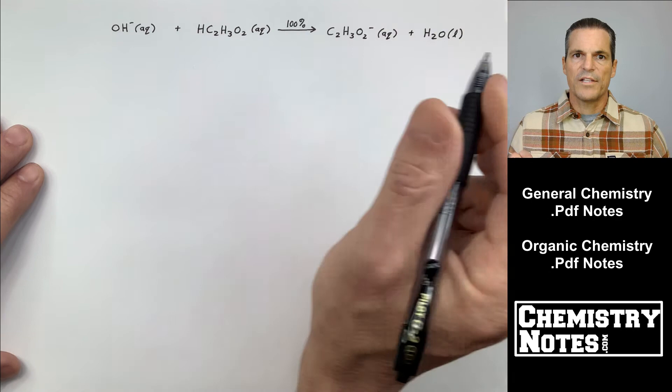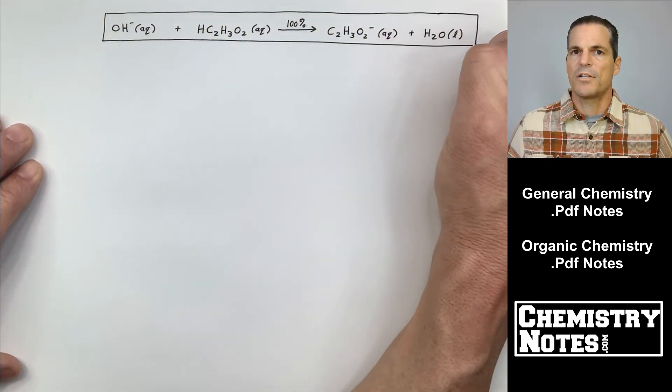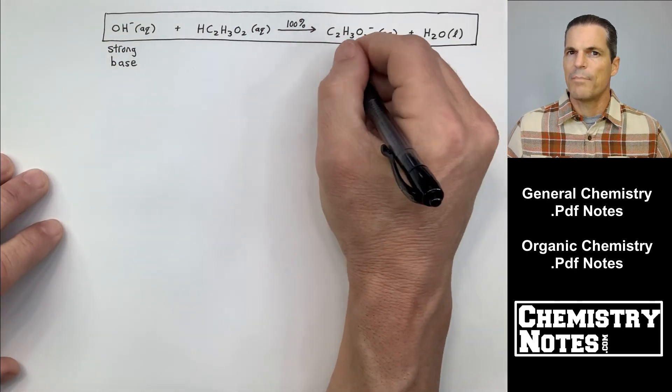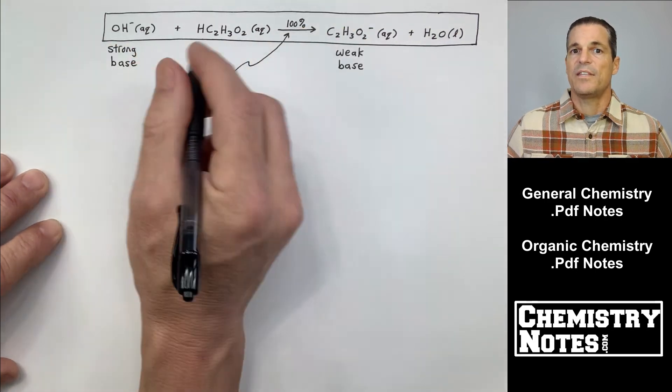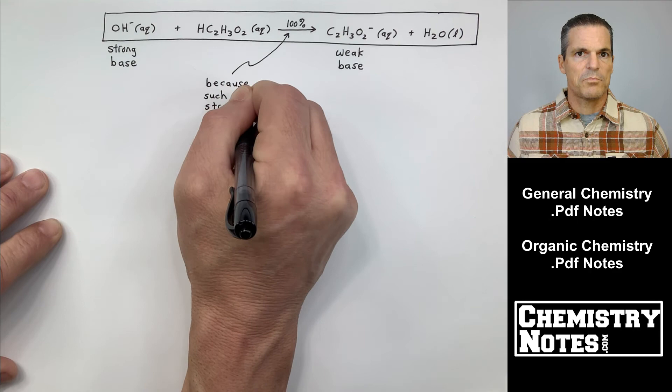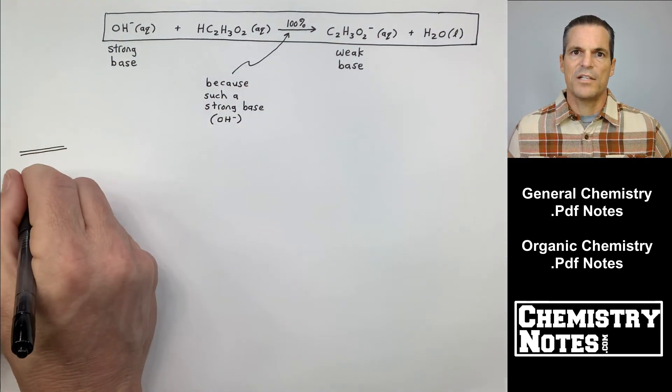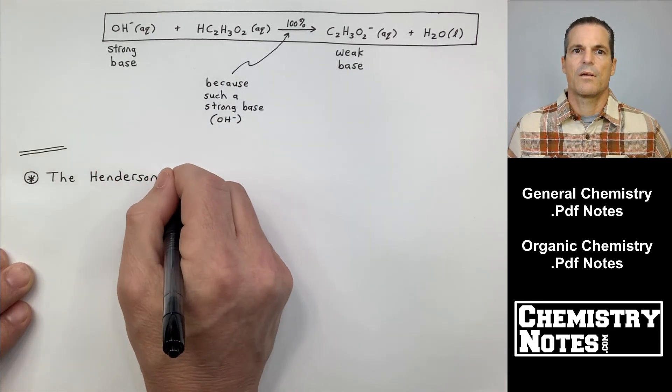100% all the OH- went away. In other words, it was quenched, and we produced C2H3O2-, a much, much weaker base than OH-. That's why the pH doesn't go up that much. The OH- is gone, and at the end, when we do our equilibrium calculations to solve for H+ concentration, there is no OH- in there, only C2H3O2-, only HC2H3O2.